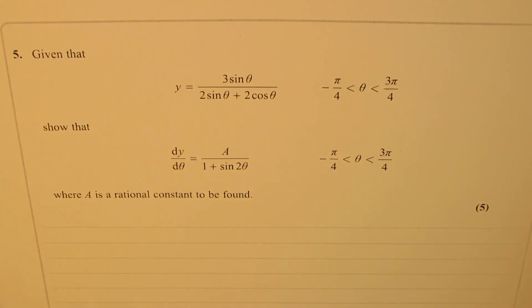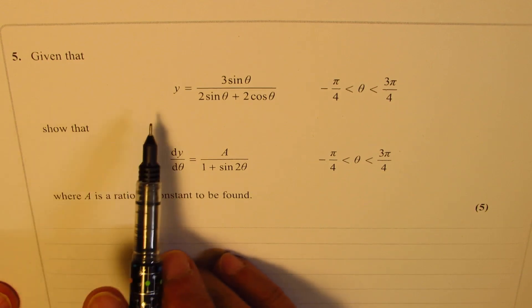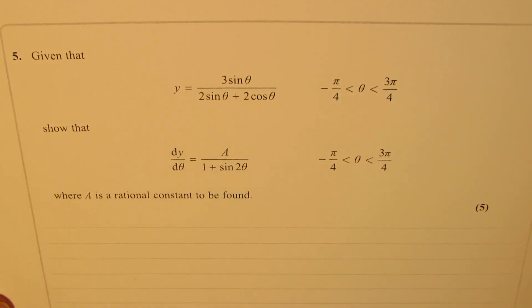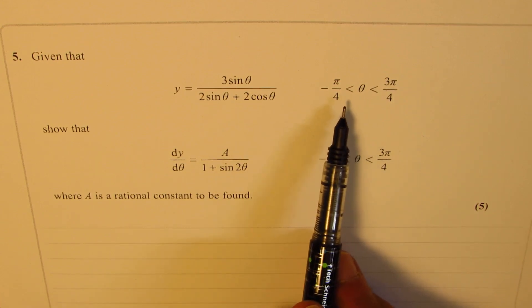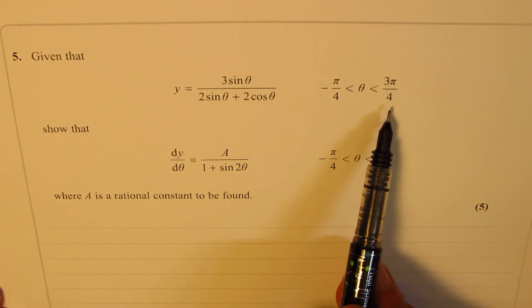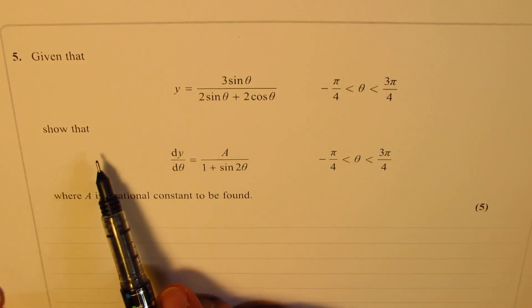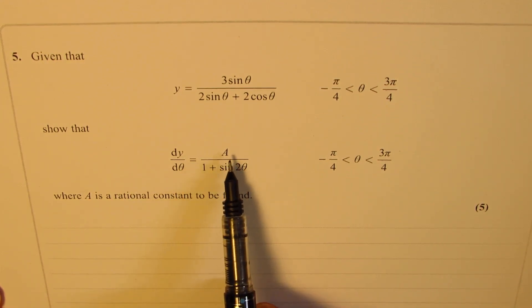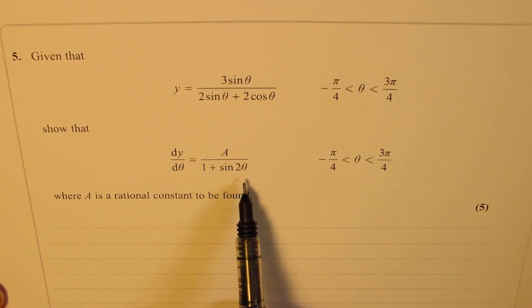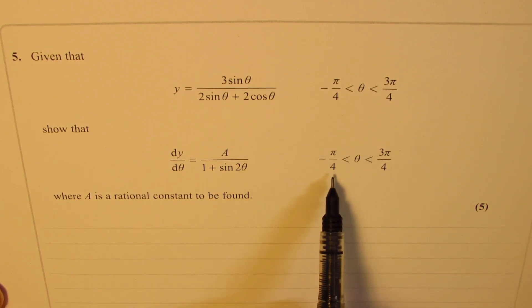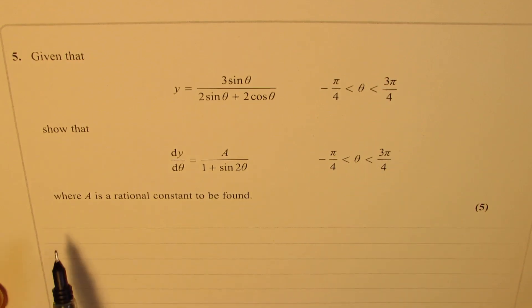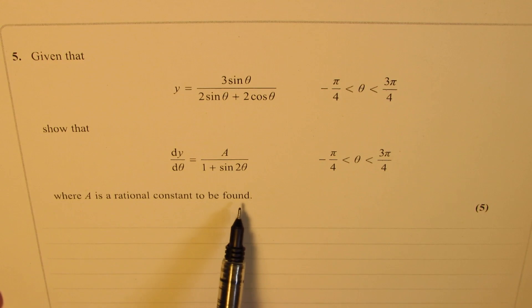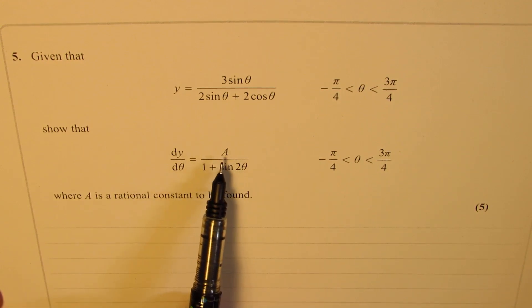The question here is, we are given that y equals 3 sine theta over 2 sine theta plus 2 cos theta, where theta is between minus pi by 4 and 3 pi by 4. We need to show that dy d theta equals a over 1 plus sine 2 theta, where theta is between minus pi by 4 and 3 pi by 4, where a is a rational constant to be found. So basically, we need to find the value of a.